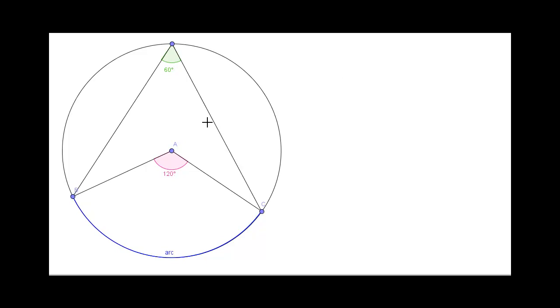So, what we're going to do today is prove that this angle here, subtended at the center of the circle, is always exactly double the size of the angle subtended at the circumference of the circle.